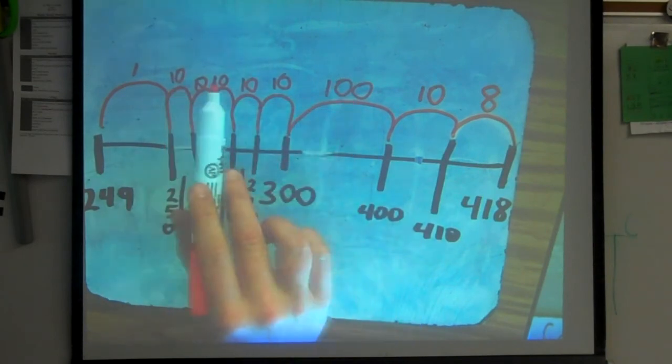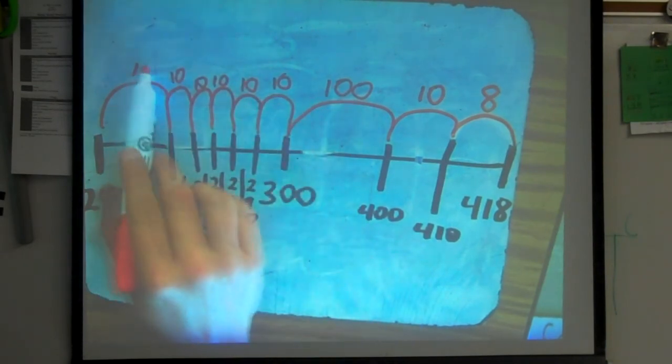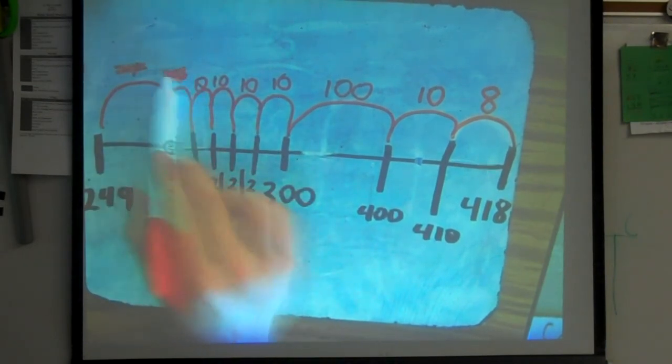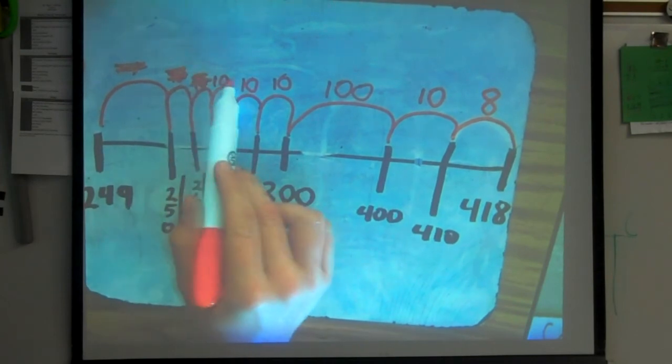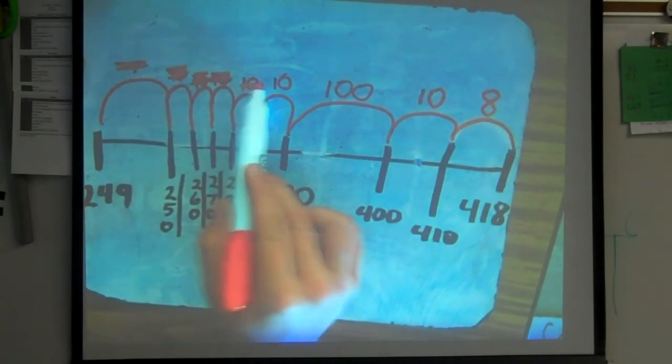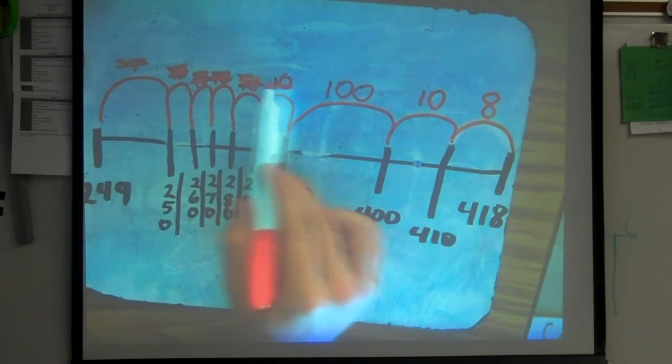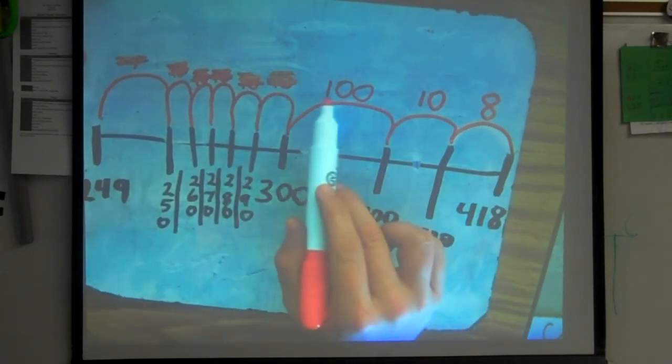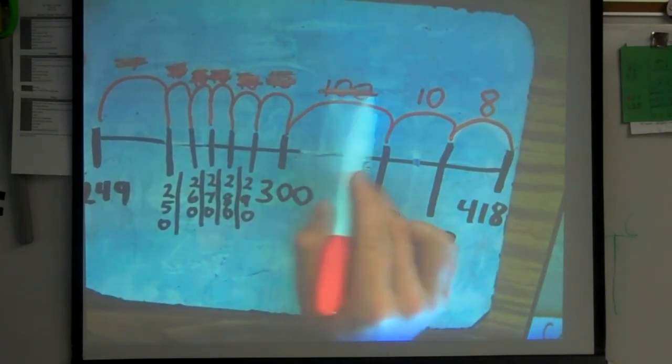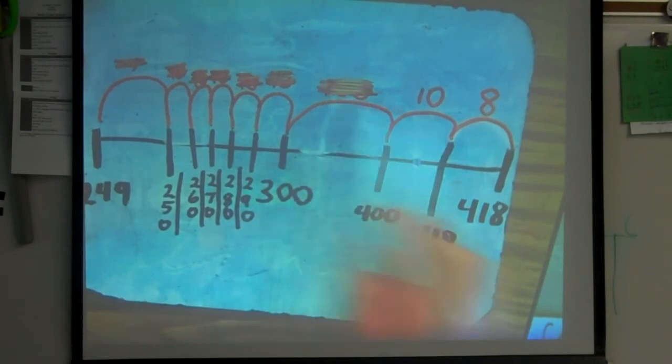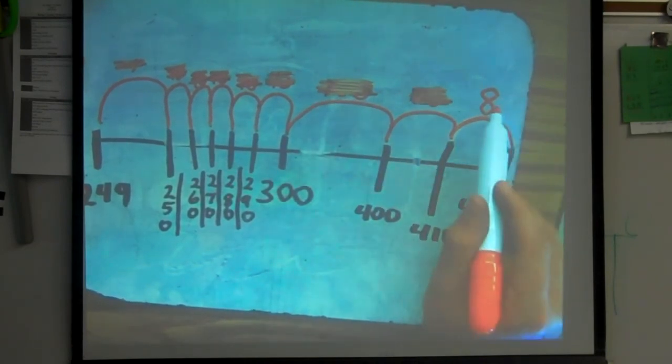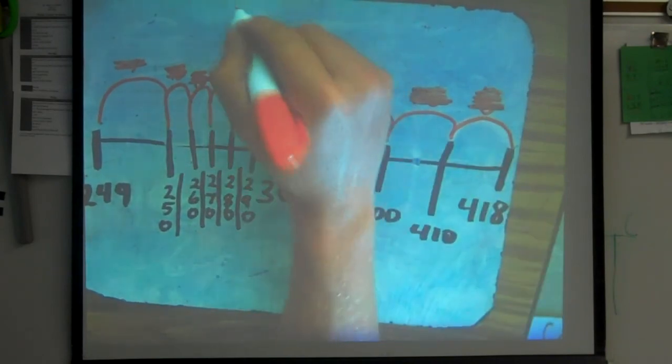Now, add all of your numbers up on top. 1 plus 10 is 11. Plus 10 is 21. Plus 10 is 31. Plus 10 is 41. Plus 10 is 51. 51 plus 100 is 151. Plus 10 is 161. Plus 8 is 169.